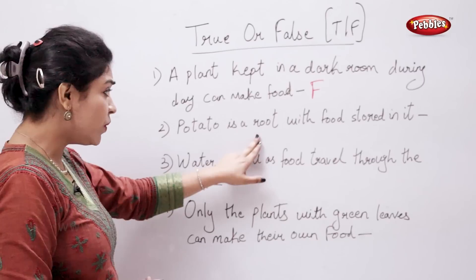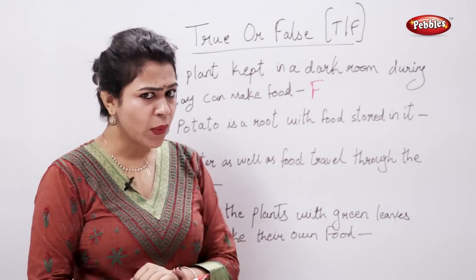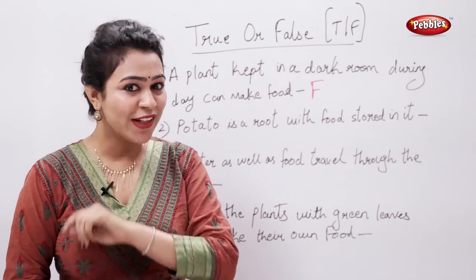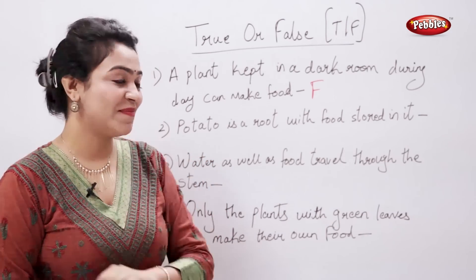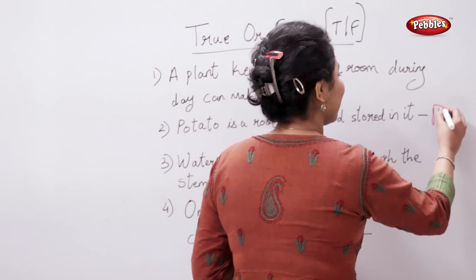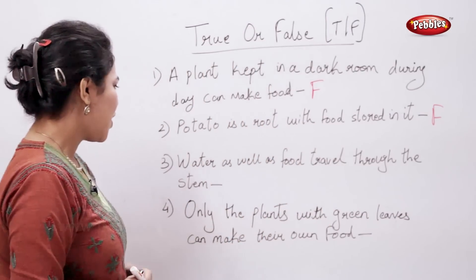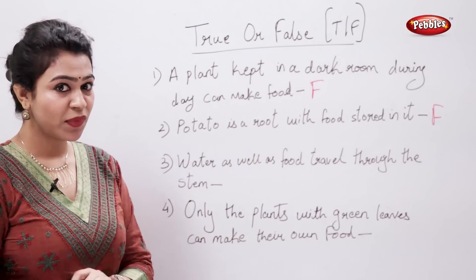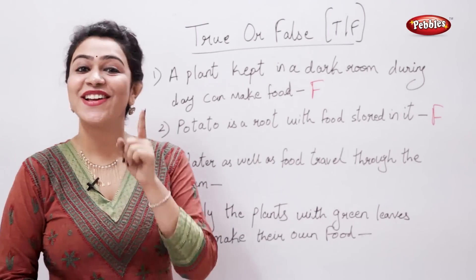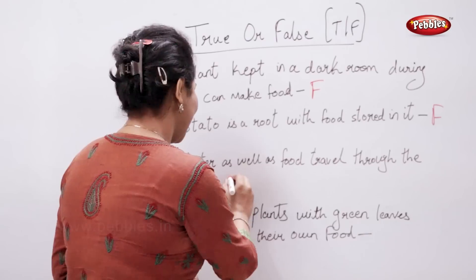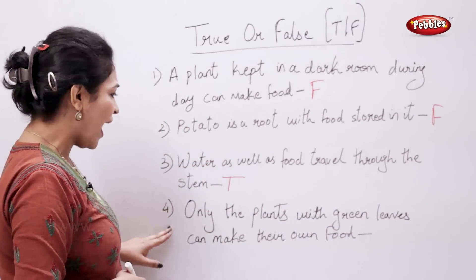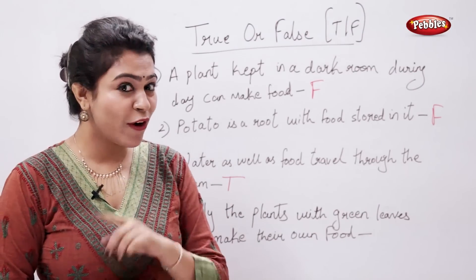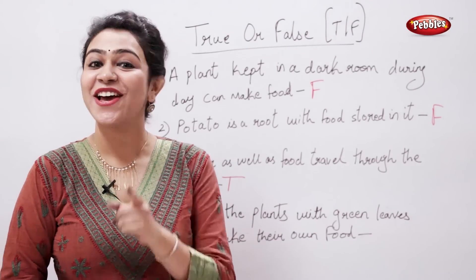True or false — potato is a root with food stored in it. That is false; potato is a stem. True or false — water as well as food travel through the stem. That is true. True or false — only plants with green leaves can make their own food. That is true.